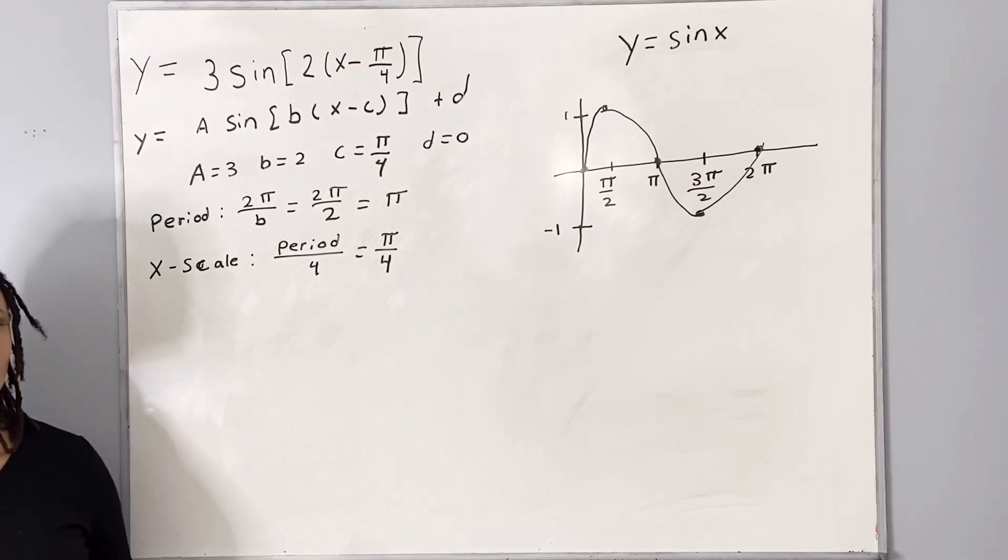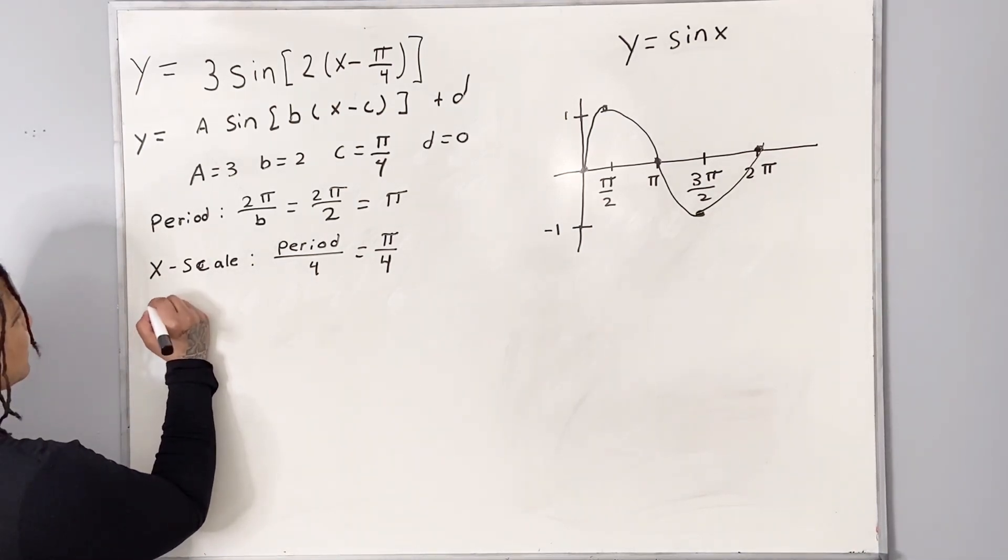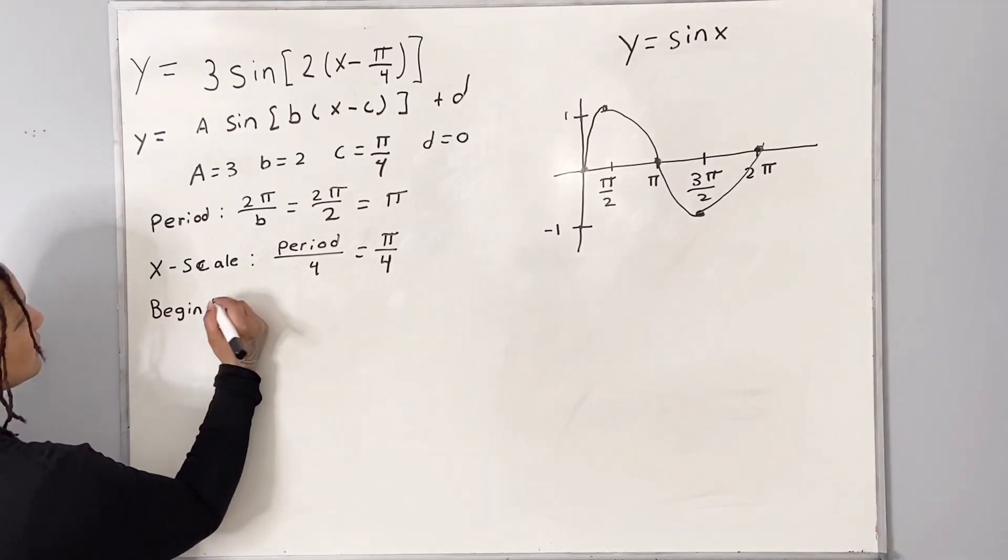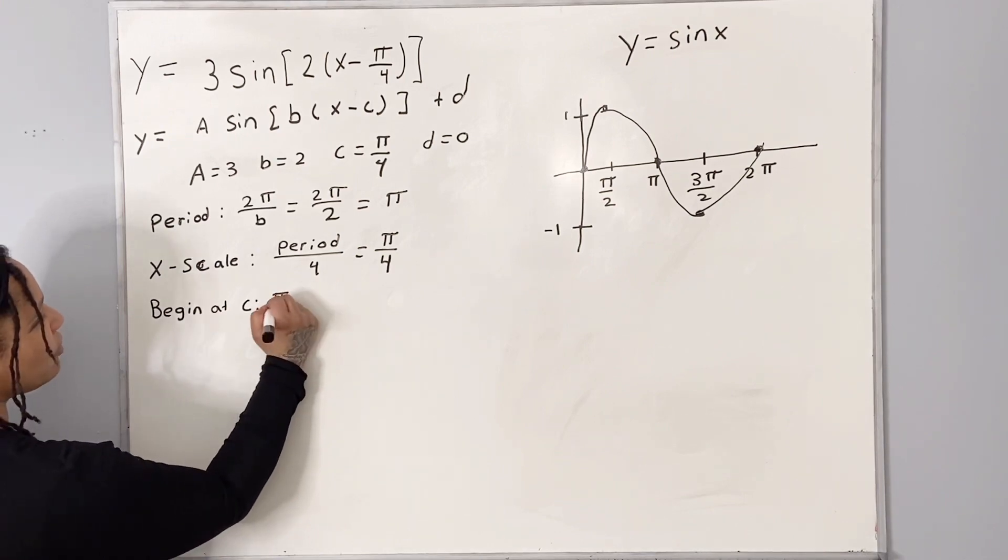So now we are going to begin our graph at c. So we say begin at c, and our c is pi over 4.